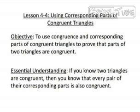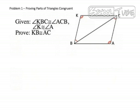Once you know that two triangles are congruent, you can make conclusions about their other corresponding parts because, by definition, corresponding parts of congruent triangles are congruent.